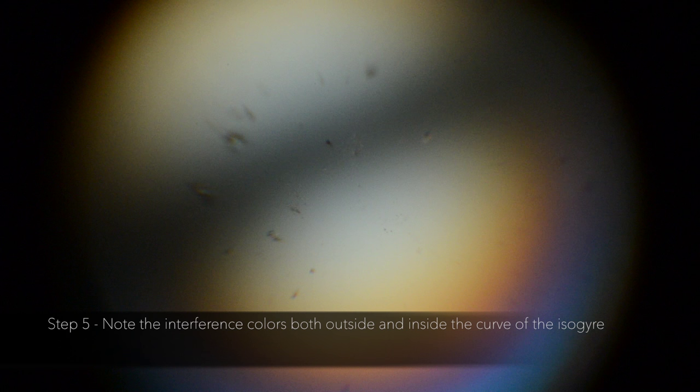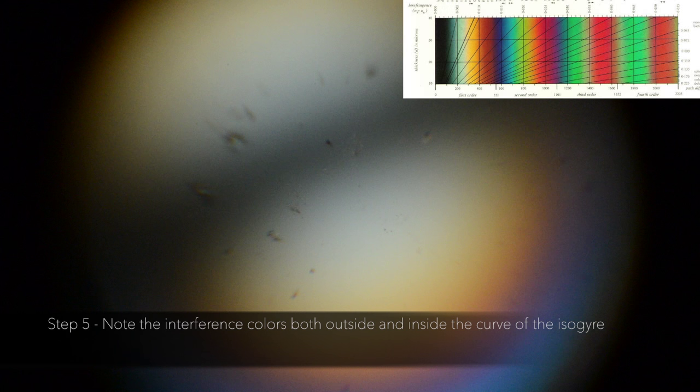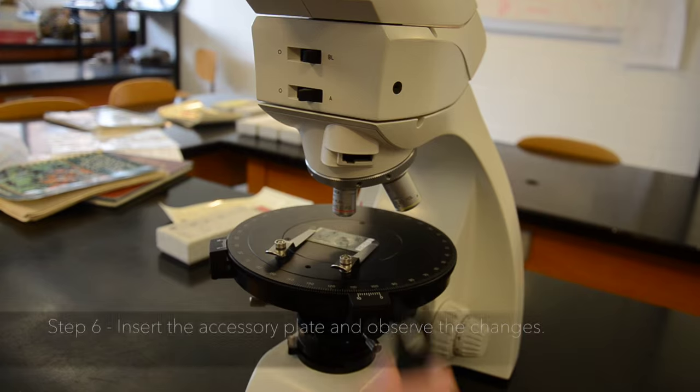Step 5. Note the interference colors both outside and inside the curve of the isogyre. Here, both sides have a range in first order isochromes. We see white, yellow, and magenta interference colors appear in that order.